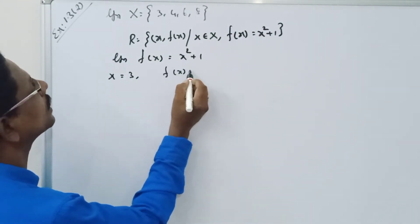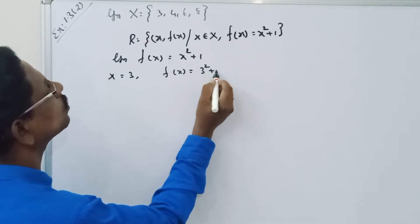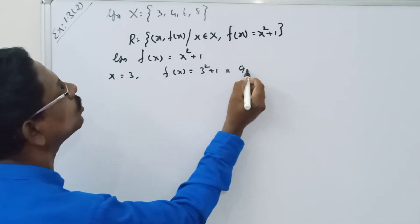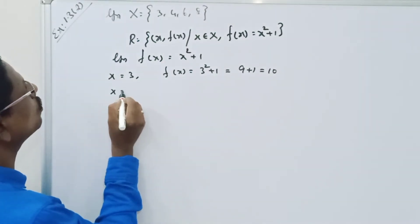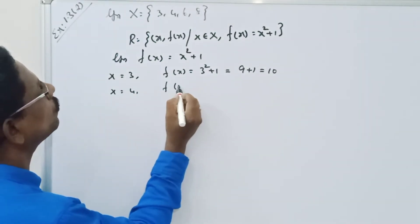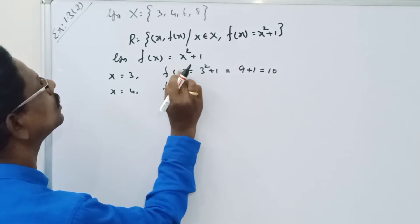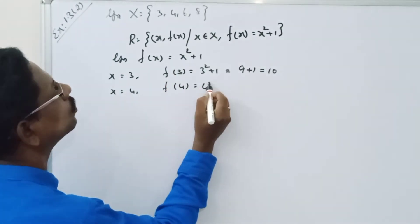When x is equal to 3, what is f of x? f of x is equal to 3 square plus 1, equal to 9 plus 1, equal to 10.